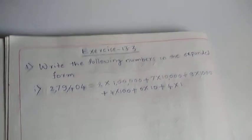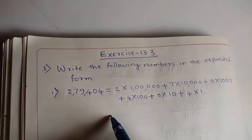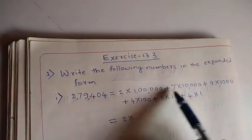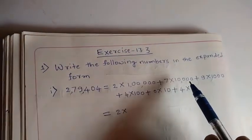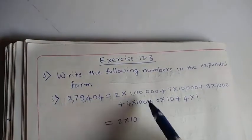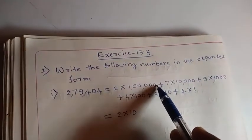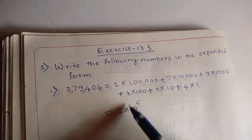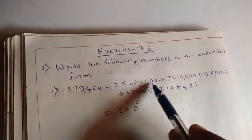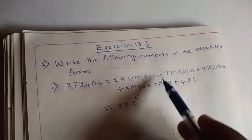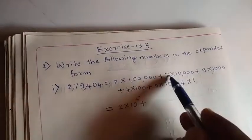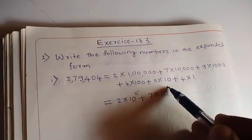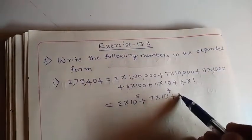The next step is to write all these — one lakh, ten thousand — in the form of exponents. Write ten, and count how many zeros are there; that number we write as the power. Put the plus sign as it is. Seven into ten — how many zeros are here? Four — so seven into ten raised to four.